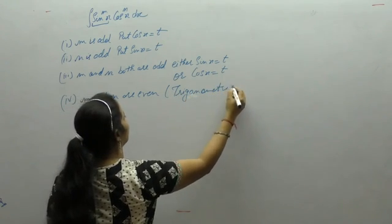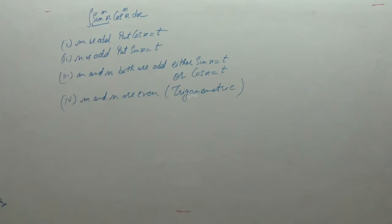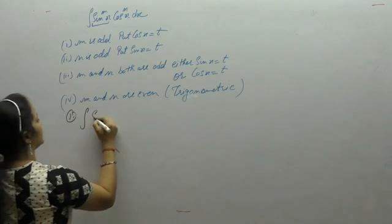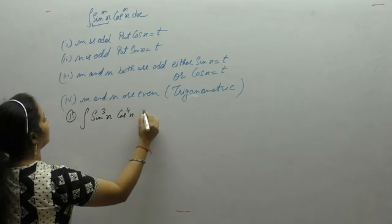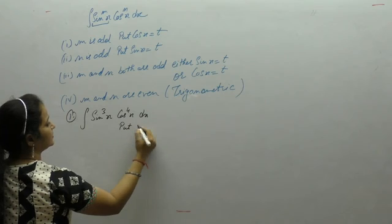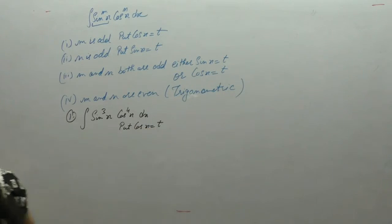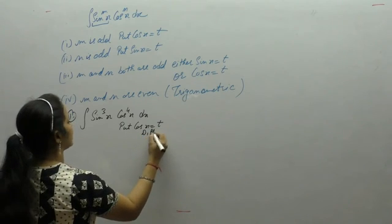Now let's start with question number 1: the integral of sin³x · cos⁴x dx. Here m is odd, so we put cos x as t. The derivative of cos x is minus sin x, so dx becomes dt.